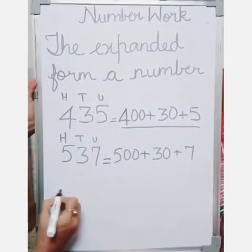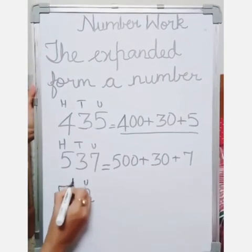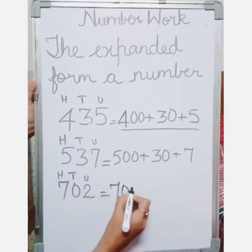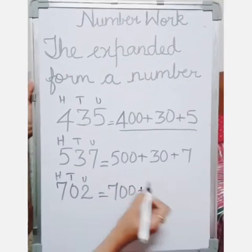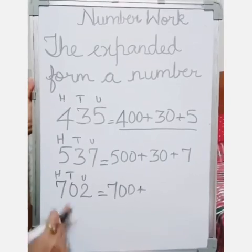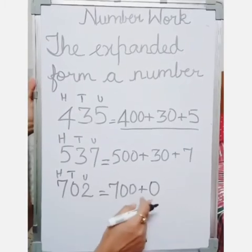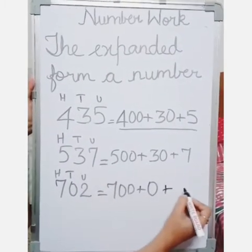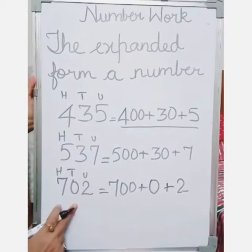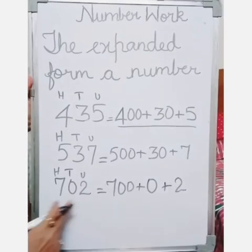We take another example: 702. What is there in the hundreds place? It is 7, so it will be written as 700. Go on to the next place — what is the digit in the tens place? It is 0. That means you are just going to write 0, because 0 has no value; 0 tens means it is just 0. And the number in the units place is 2. So this is the method to write when you have a 0 in the tens place — you will just write 0. This is the expanded form of 702.